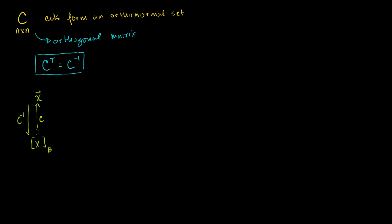But we also know that any matrix-vector product is also a linear transformation. So this change of basis is really just a linear transformation. What I want to show you in this video — and you can view it either as a change of basis or as a linear transformation — is that when you multiply this orthogonal matrix times some vector, it preserves lengths and angles.